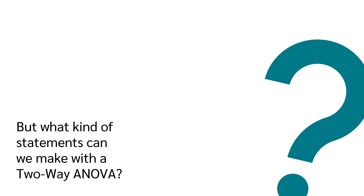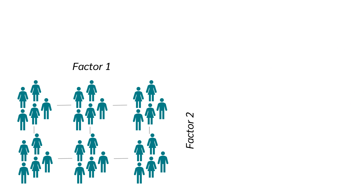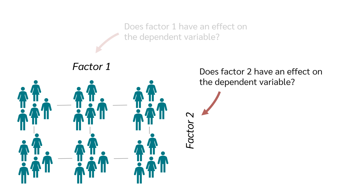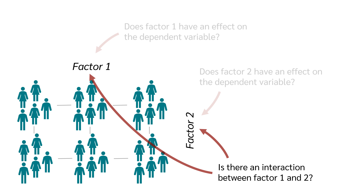What kind of statements can we make with a two-way ANOVA? With the help of a two-way ANOVA, we can answer three things: whether the first factor has an effect on the dependent variable, whether the second factor has an effect on the dependent variable, and whether there is an interaction effect between the two factors.